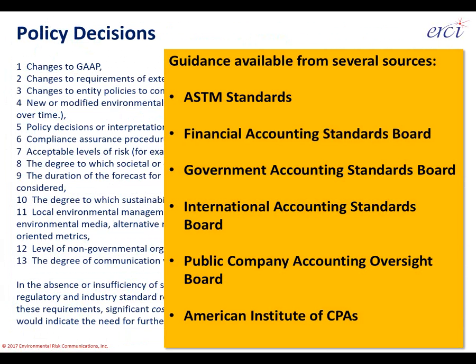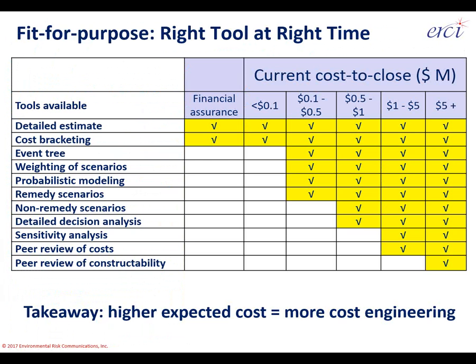Over time you'll find different tools are brought in based on the size and materiality of an environmental liability. Across the top are different costs to close: under $100K, $100K to $500K, on up to $5 million plus. These are not hard and fast rules, but experience-driven guidance. For example, you can expect to develop an event tree for a $100,000 site — under that threshold it's probably not an effective investment. For a million-dollar site, you can expect to do a sensitivity analysis, peer review of costs, and constructability review.